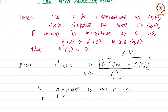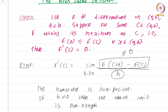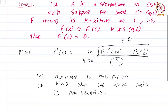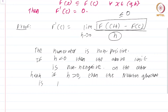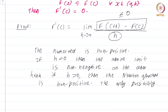If h is less than 0, then the above limit is non-negative, because the numerator is non-positive and the denominator is negative, so the quotient is non-negative. On the other hand, if h is greater than 0, the quotient is non-positive because the denominator is positive whereas the numerator is non-positive. The only possibility is f prime of c equal to 0. As you approach from the right and the left the signs are different; therefore, at point c the only possibility is that f prime of c is 0.